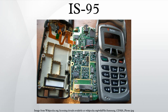Once a mobile has found a strong pilot channel, it listens to the sync channel and decodes a sync channel message to develop a highly accurate synchronization to system time. At this point the mobile knows whether it is roaming and that it is in service. BTSs transmit at least one, and as many as seven, paging channels starting with Walsh code 1.